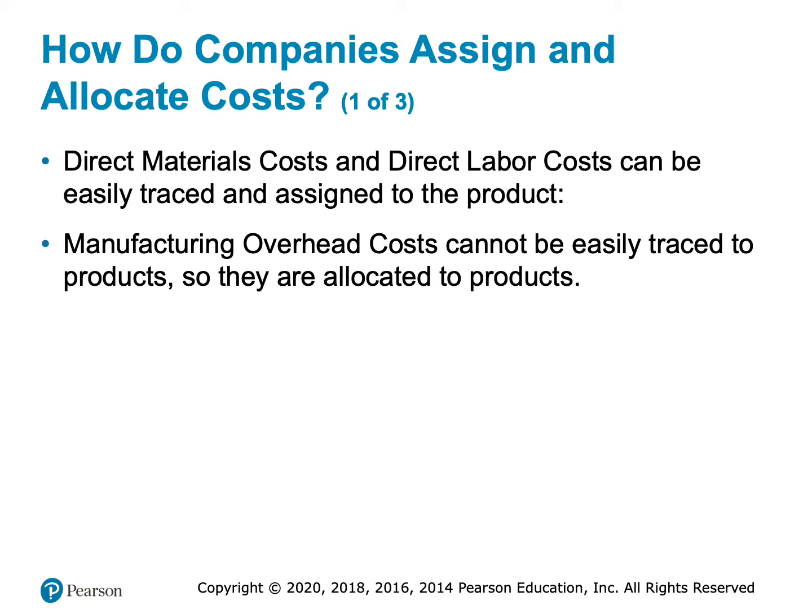Think about all the different products Walt Disney makes — stuffed toys in the Disney store, T-shirts, TV shows, movies, food served in their theme parks — all of those are consuming overhead at different rates and in different ways. So using one predetermined overhead rate to allocate overhead to all of those products and services doesn't make a whole lot of sense.